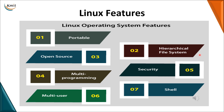The next feature is the hierarchical file system. You have a large number of files stored in your system, and those files are organized in a tree-like structure, which we call a hierarchical file system. The third feature is open source — any user who wants to add an extra feature to the operating system can do so. The operating system is open to all users, allowing them to change the source code and make it functional again.